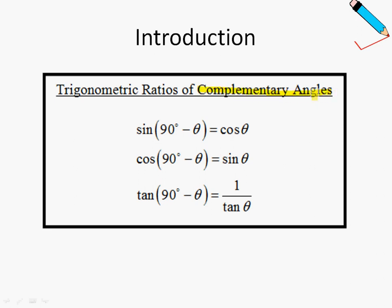So what exactly are complementary angles? Let me just use a very simple illustration. Suppose angle A plus angle B gives me 90 degrees, then we can say that angle A and angle B are complementary.